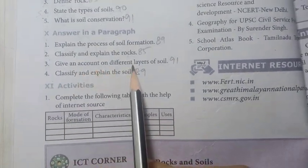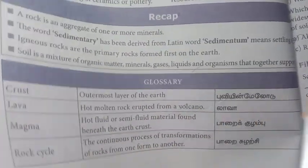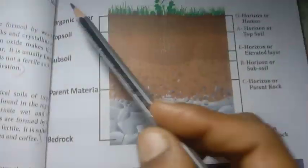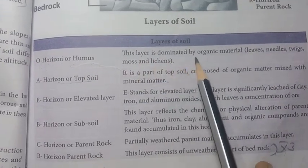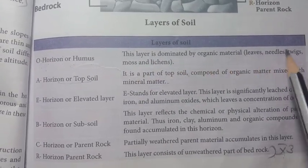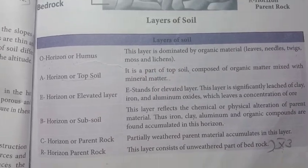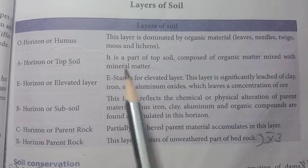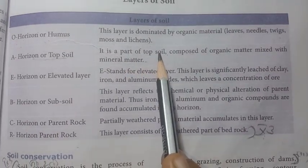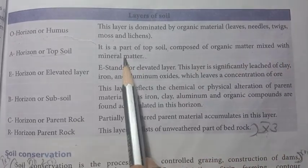Third detail: give an account on different layers of soil. Different layers of soil — with a drawing. Horizon O or humus layer: this layer is dominated by organic material.